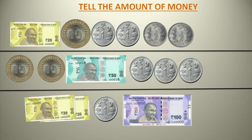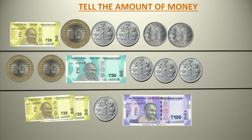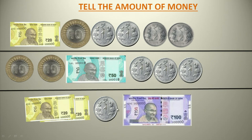Now I have given you some questions to do by yourself. You have to add all the amounts and calculate the total money. In the first picture: one 20 rupee note, one 10 rupee coin, three 1 rupee coins, and two 2 rupee coins. In the second row: two 10 rupee coins, one 50 rupee note, and three 1 rupee coins. In the third column: two 20 rupee notes, one 1 rupee coin, and one 100 rupee note. Add all values to find the total amount.